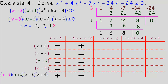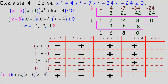Between negative 2 and negative 1, use negative 1.5: negative 1.5 plus 4 and plus 2 are positive, but plus 1 and minus 3 are still negative. Two negatives make the product positive. Between negative 1 and 3, use x equals 0: 0 plus 4, plus 2, and plus 1 are positive, but 0 minus 3 is negative — one negative makes the product negative. Above 3, use x equals 9: all four expressions are positive, so the function is positive.